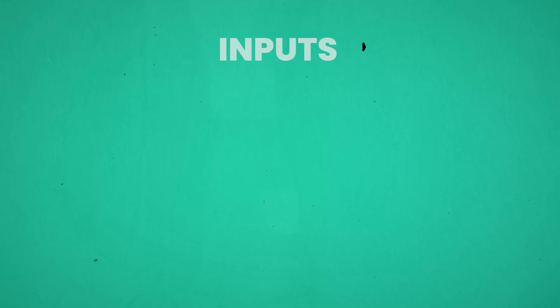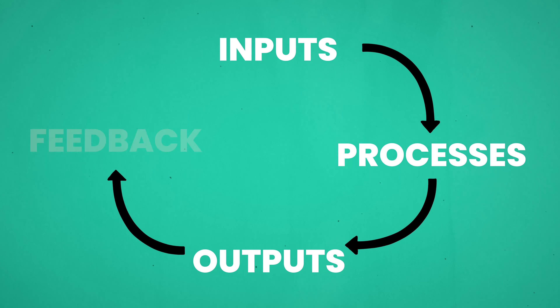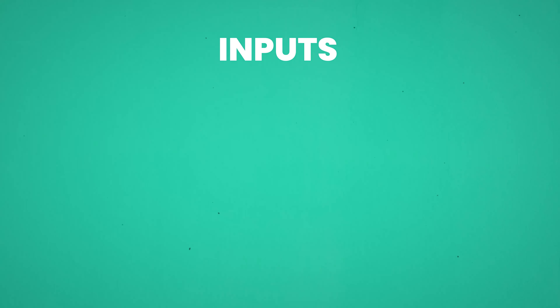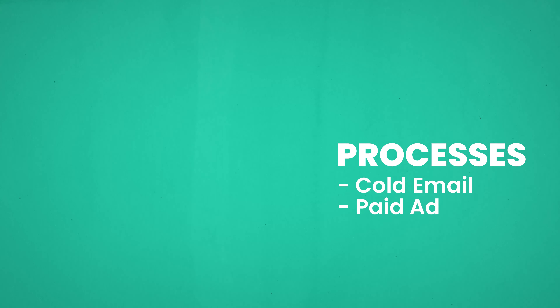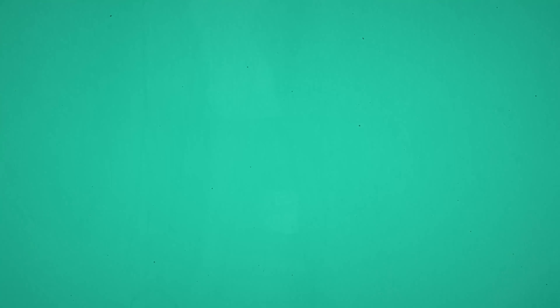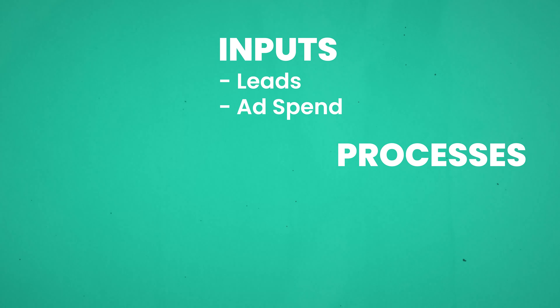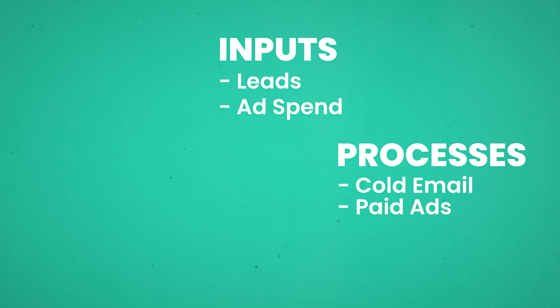An acquisition system comprises of inputs, processes, outputs, and then feedback. Inputs would be the leads that we're contacting, people we're reaching out to, or the ad spend we're putting into the system. The process is how we're actually trying to get somebody onto a sales call, and a sales call is the output. So you've got leads, the process which is the acquisition system — maybe it's cold emails, maybe it's paid ads — and then on the other side, you have sales calls.